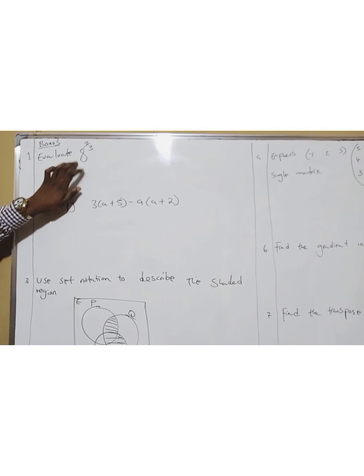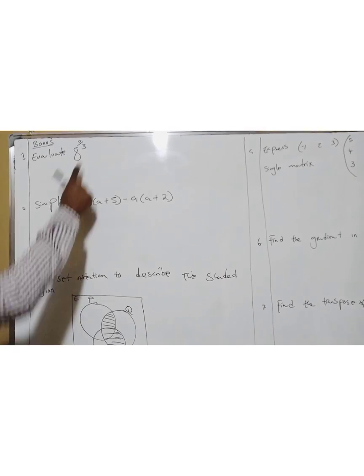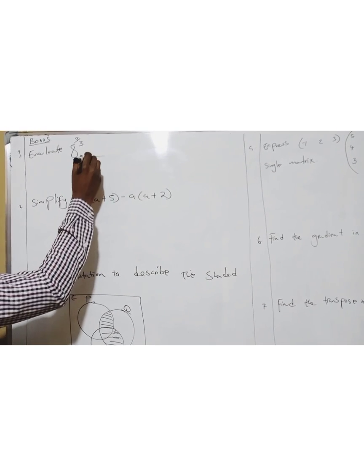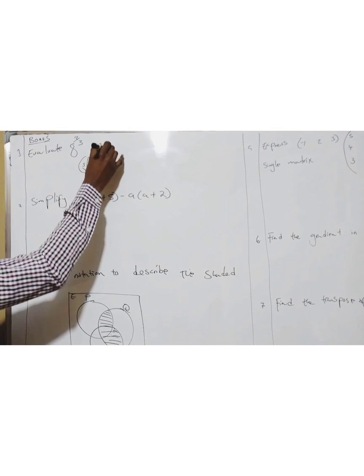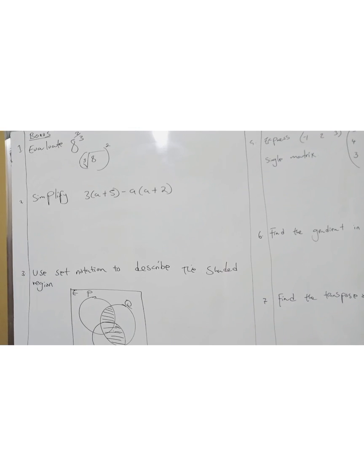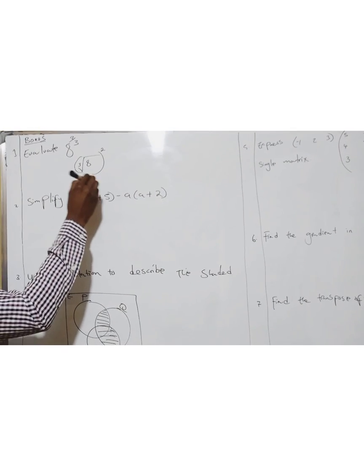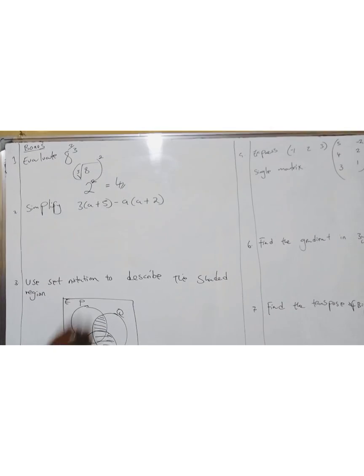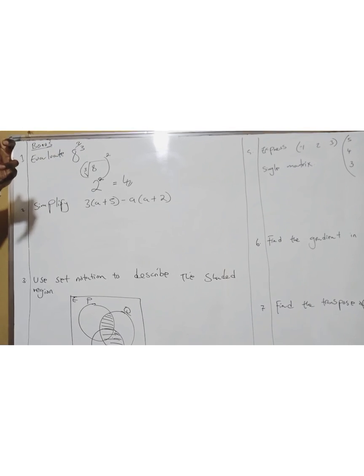Question one says evaluate 8 to the power 3/2. You should know this is in indices. The 2 stands for a root, the cube root, and the 3 stands for power. So what you're going to do is cube root of 8, which is 2, then 2 to the power 2 is 4. Always look at the denominator as the root, the numerator as your power.